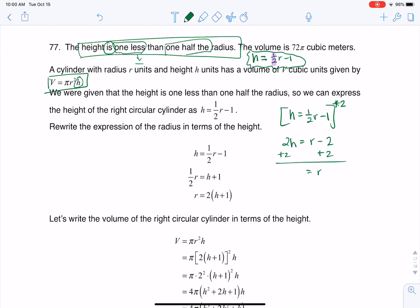I could add 2 to both sides. So now I'm looking at r equaling 2h plus 2. I'm going to write it this way. And then I could factor out the GCF and get 2 times h plus 1.